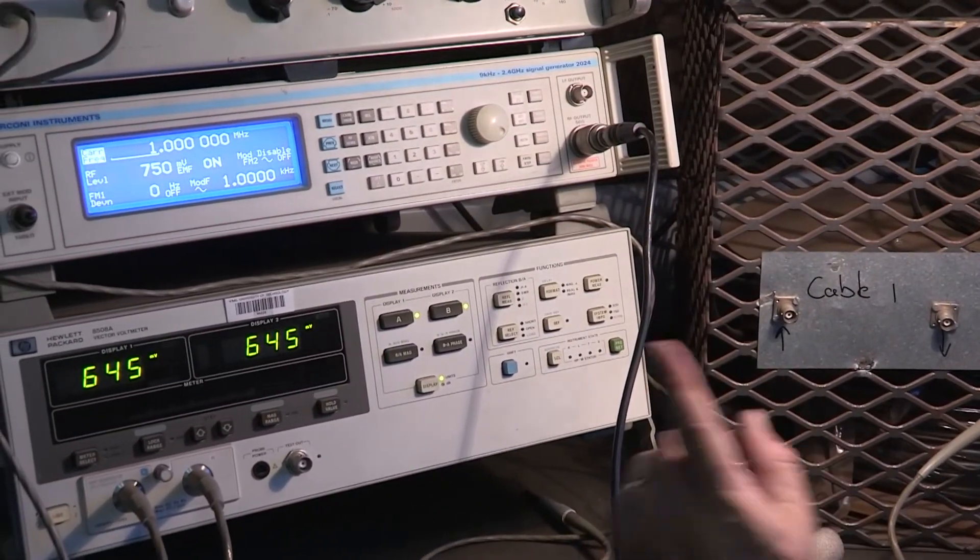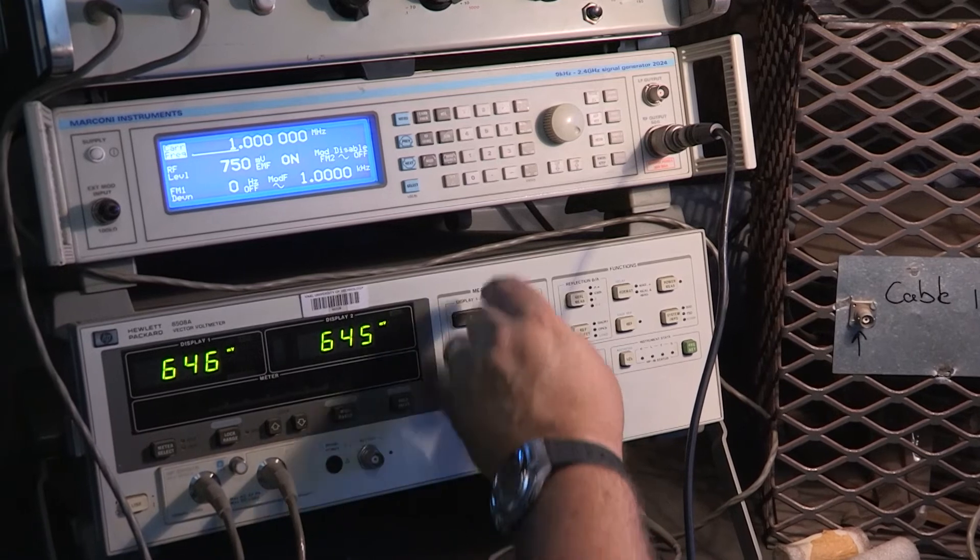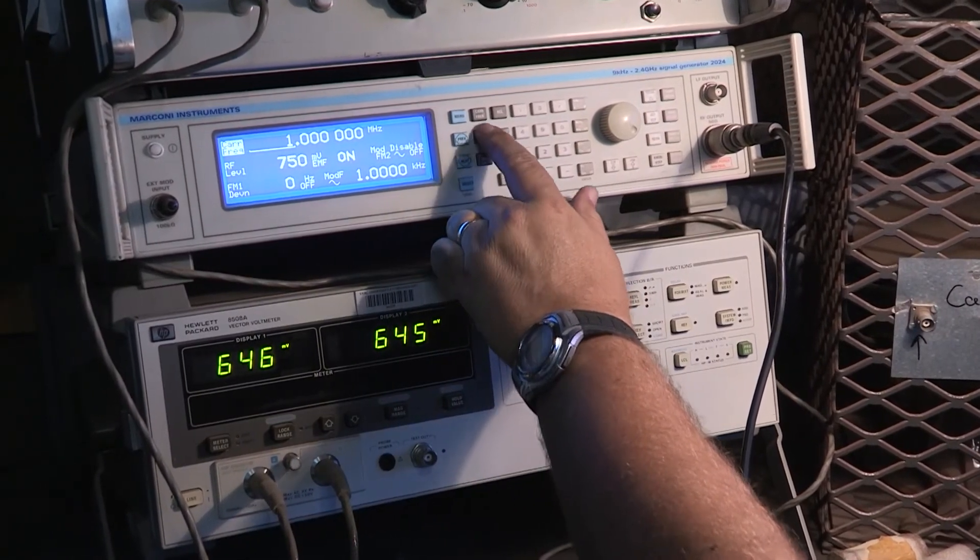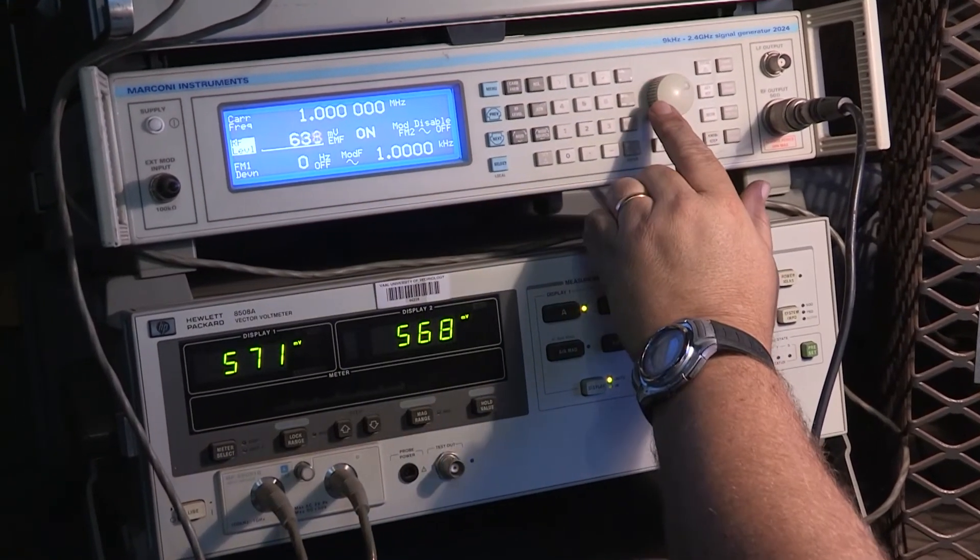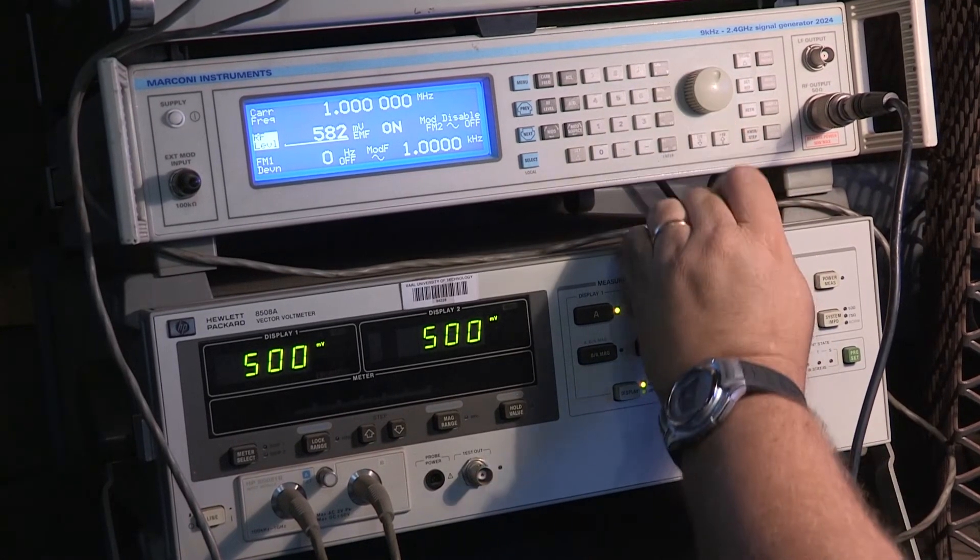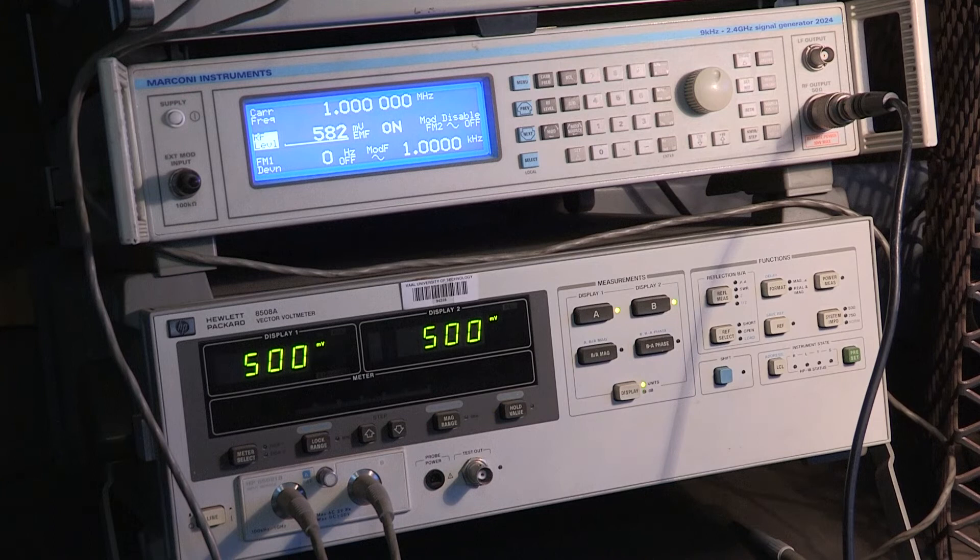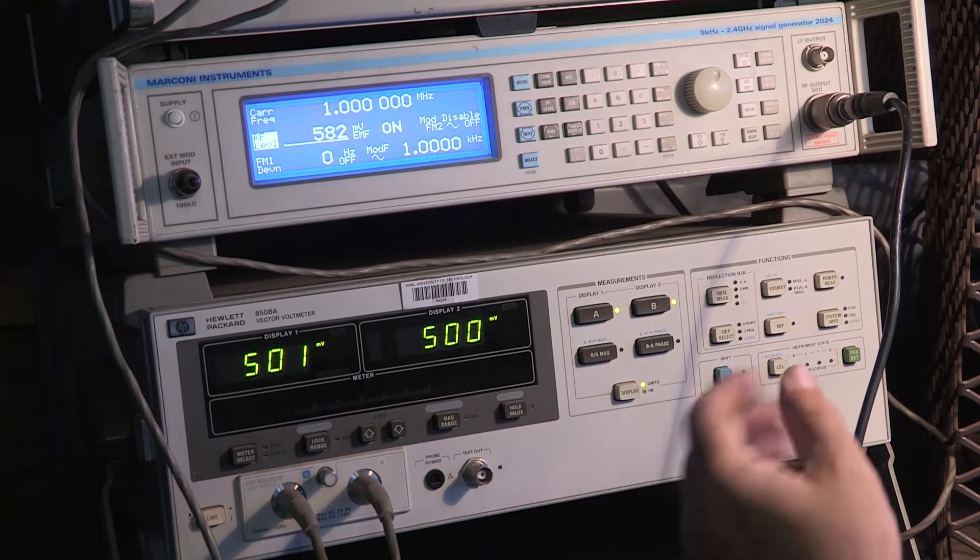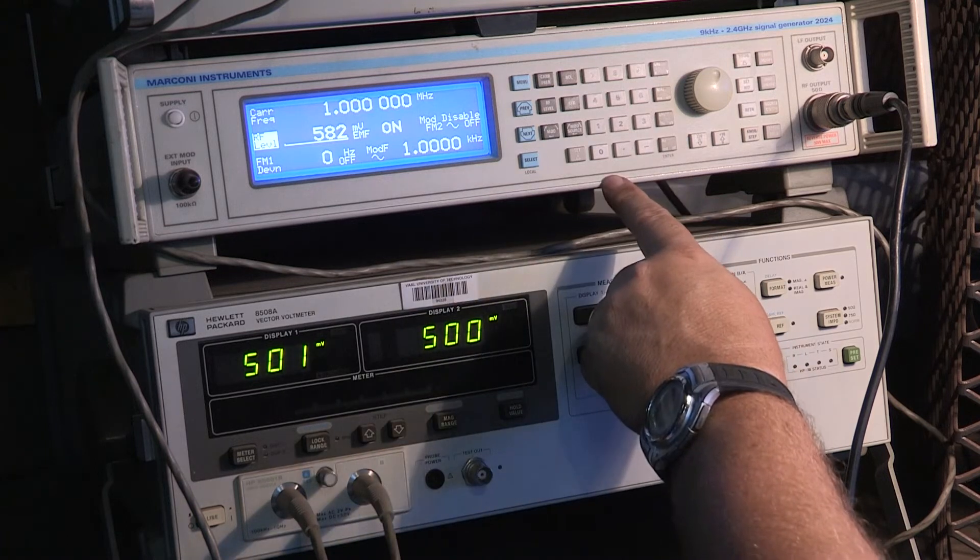Now again, we're going to start with the same channel A level. So RF level here. Bring it down to 500. It doesn't help you do it at 600 all the way because you need to compare apples to apples.